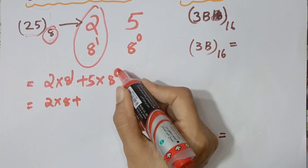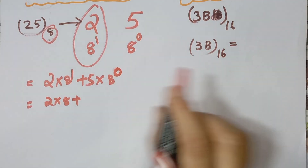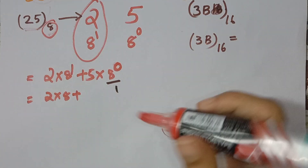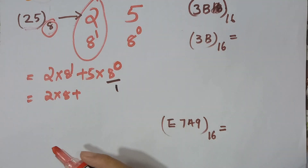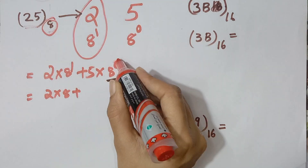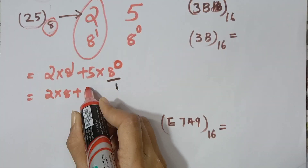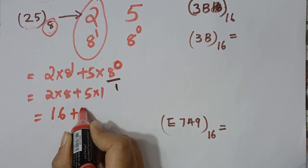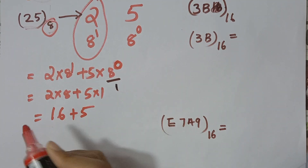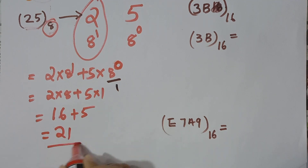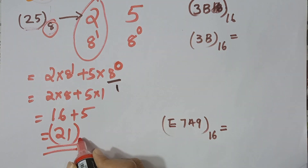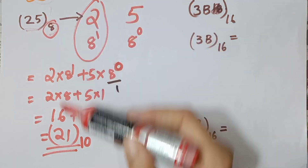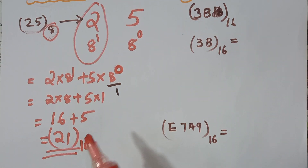The power 0 means 8 raised to 0 is 1. So 2 into 8 is 16, plus 5 into 1 is 5. 16 plus 5 is 21. The decimal value is 21.